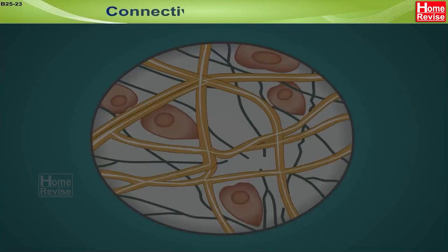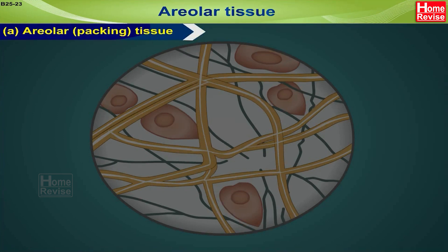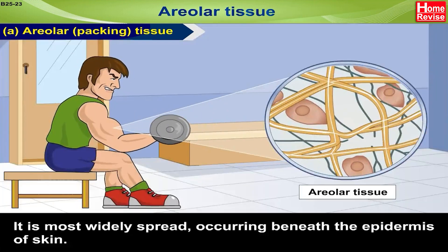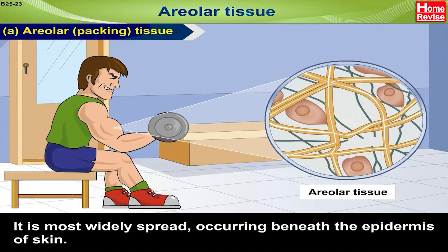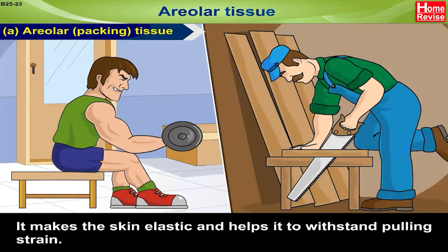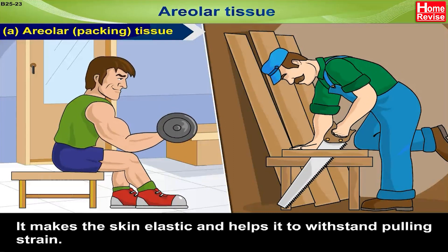Connective tissue proper. One: Areolar tissue — also called packing tissue. It is most widely spread, occurring beneath the epidermis of the skin. It makes the skin elastic and helps it to withstand pulling strain.